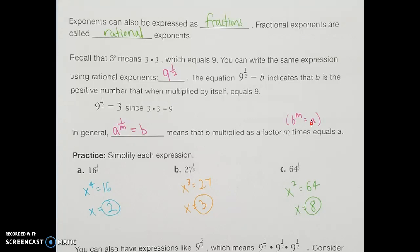For 16 to the 1 fourth power, we ask: what number raised to the 4th power gives 16? That's 2, because 2 times 2 times 2 times 2 equals 16. For 27 to the 1 third power, what number raised to the 3rd gives 27? That's 3, since 3 times 3 times 3 is 27. For 64 to the 1 half power, since 8 squared is 64, the answer is 8.